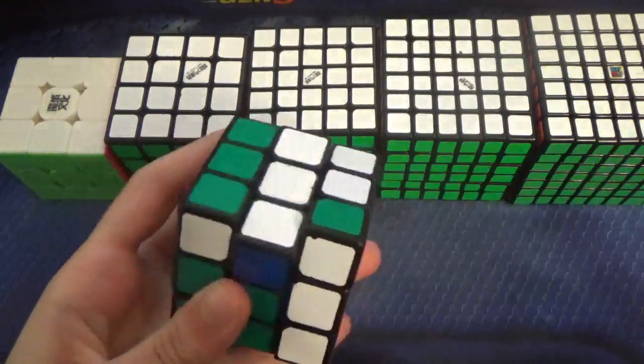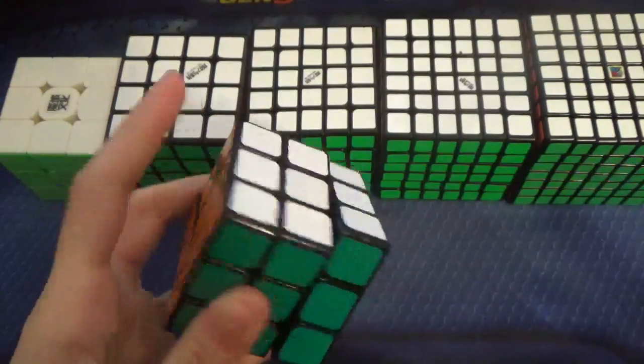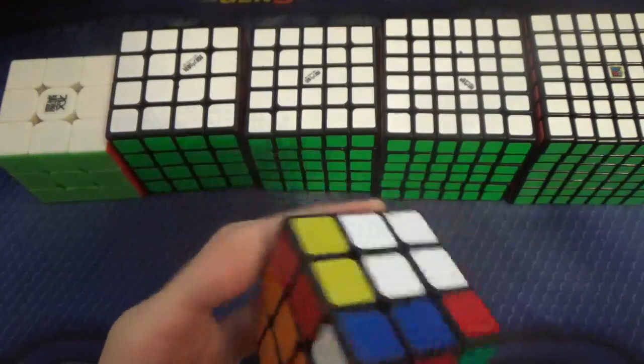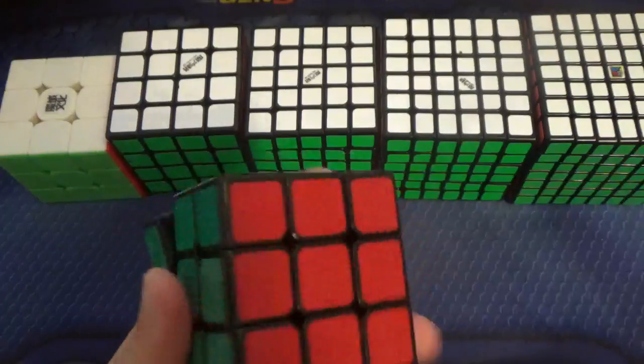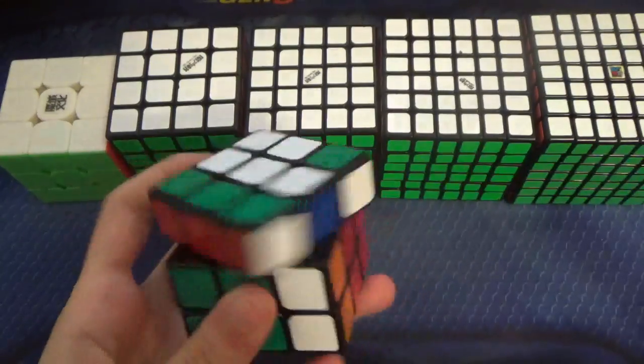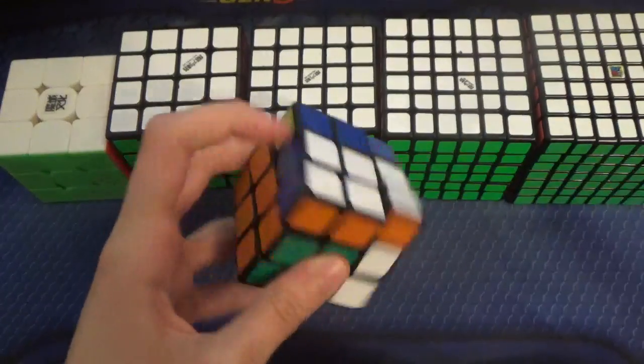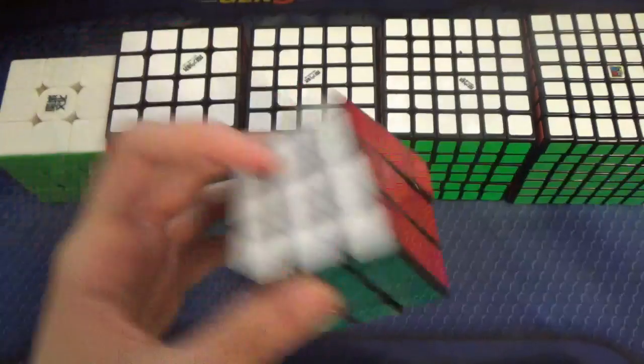The last event is one-handed. This is the 50mm Gan 356 Air. My goal is to get a sub-19 average and a sub-16 single. There's two rounds, so maybe I'll make the finals.